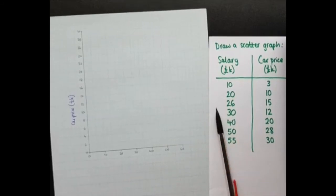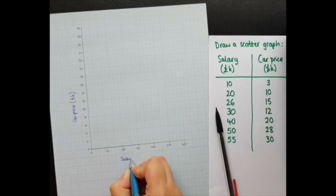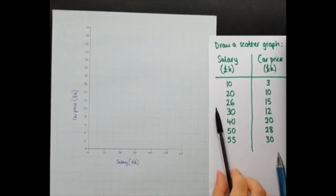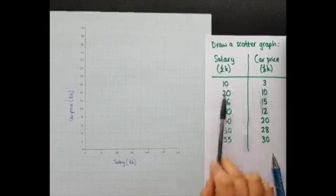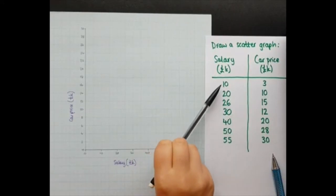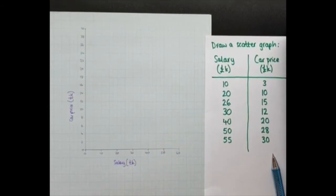So now I'm going to label this as salary and my units. Great. So now it comes to plotting my points. I've got each set of these points and I'm going to have my salary on the x-axis and my car price on the y-axis. And I'm going to follow the along the corridors and up the stairs rule.